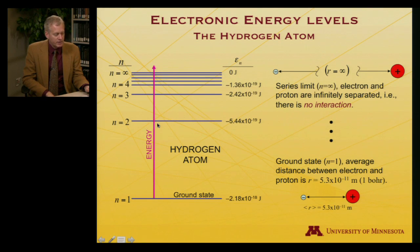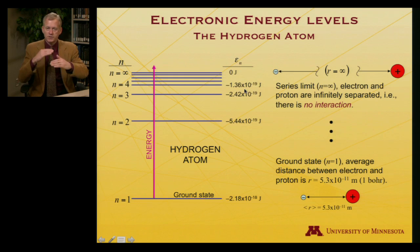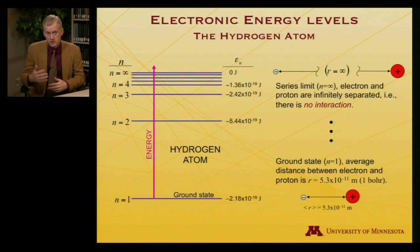The next allowed energy level up, n equal to 2, has an energy of minus 5.44 times 10 to the minus 19th joules. And there's another level after that, number three, and then number four. And you'll notice that the spacing between these levels is getting closer and closer. So they're not equally spaced.